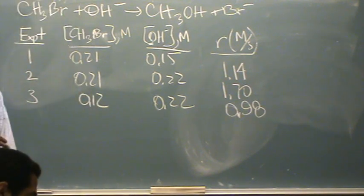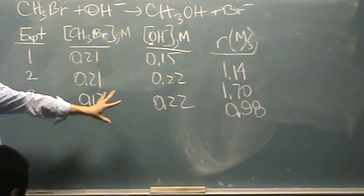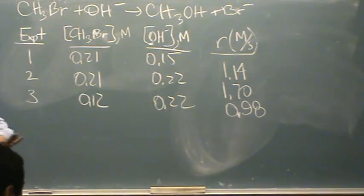This is a typical finding the order only using the rate law, not the integrated rate law, not anything else. It has a list of experiments, it has the concentrations listed, and the rate listed. It'll say something like, find the order, and find the K.